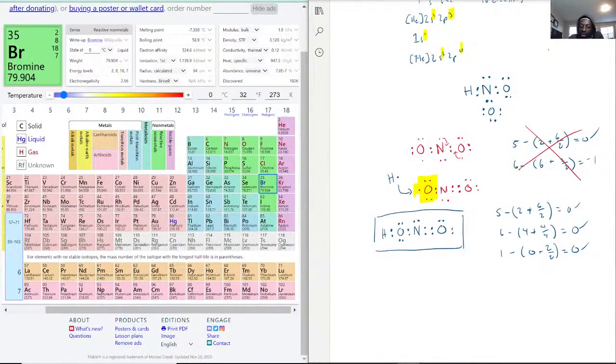And this is what the element looks like in the Lewis dot diagram. To redraw this with bonds, it will be kind of like this: H-O-N-O, like that. That would be HNO2.